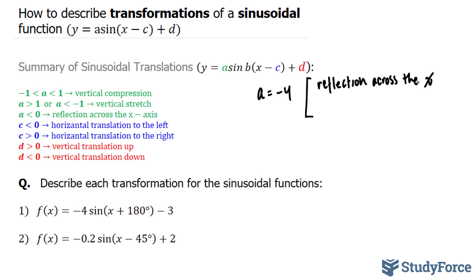In addition, this tells us that if a is less than negative 1, you end up with a vertical stretch. A vertical stretch will make the wave skinnier — in other words, it will take all the y-coordinates along the wave and make them bigger, which gives you the impression that the wave is getting skinnier.